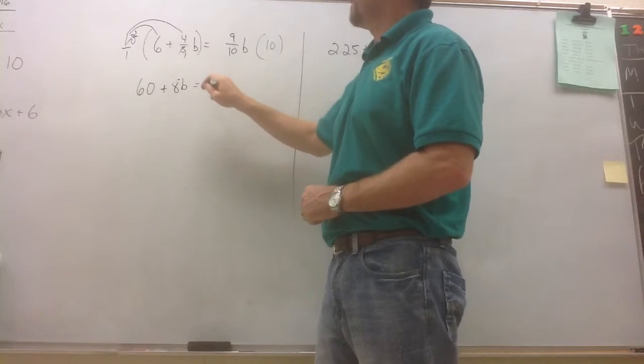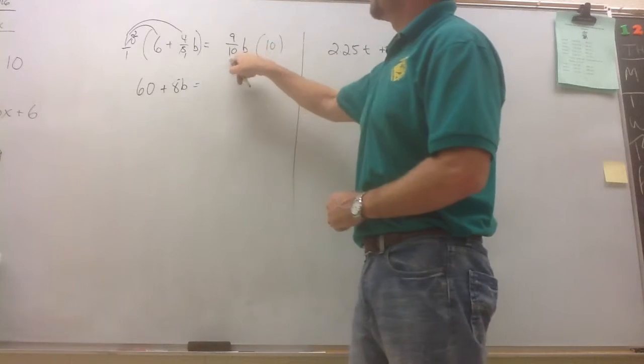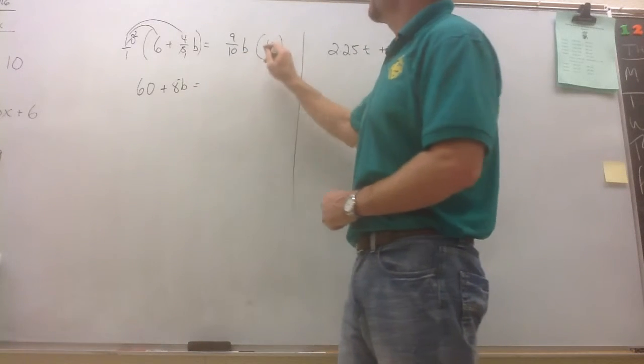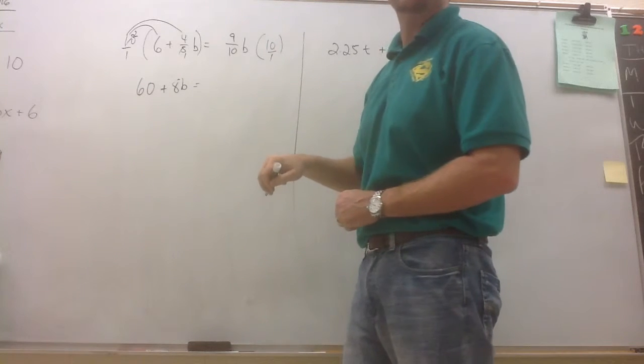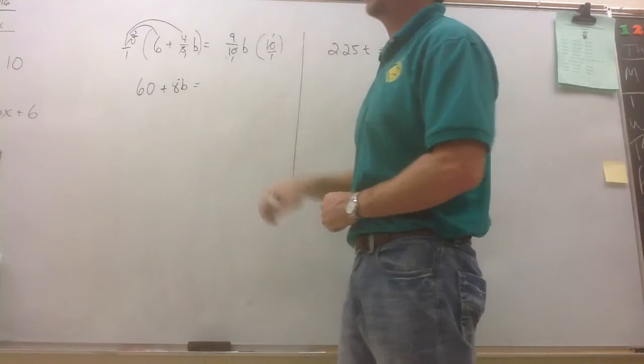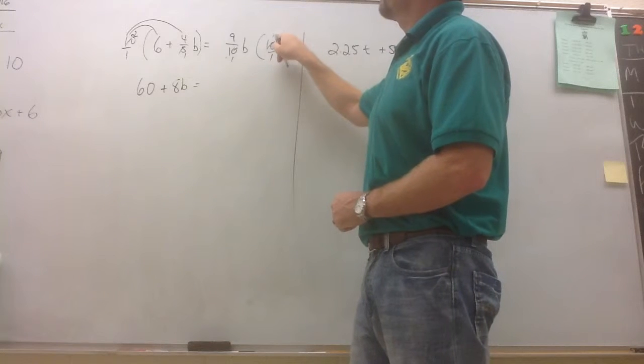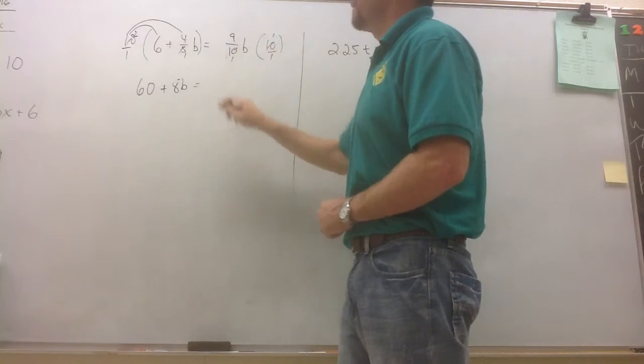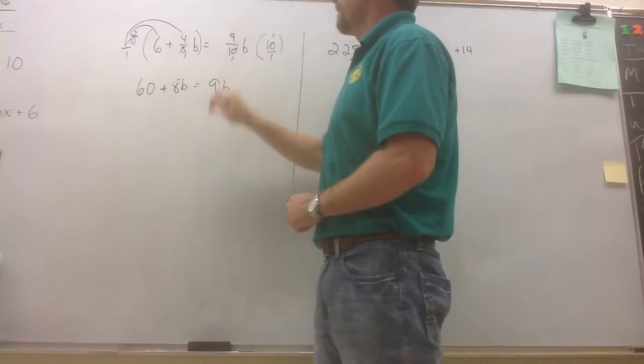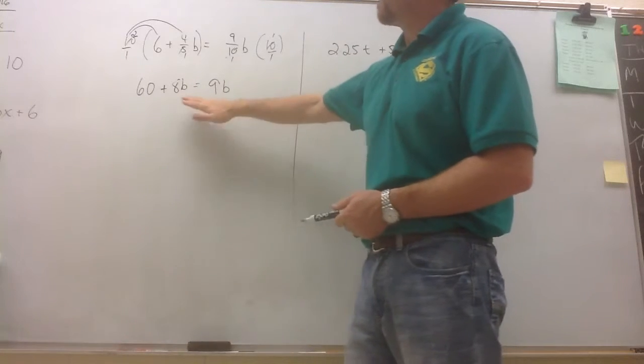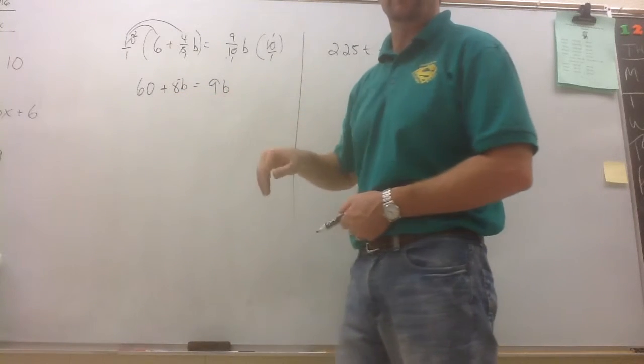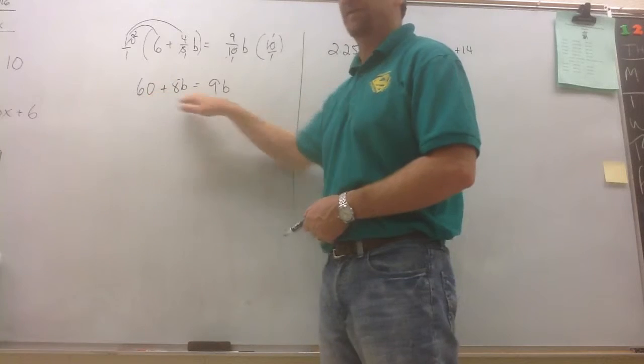Same thing over on the right side of the equation. 9 tenths b times 10 with that 10 over 1. Simplify before you multiply. 10 goes into 10 once. And now I have 1 times 9b is 9b. And now we have another equation with the variable on both sides, but we've eliminated the fractions.